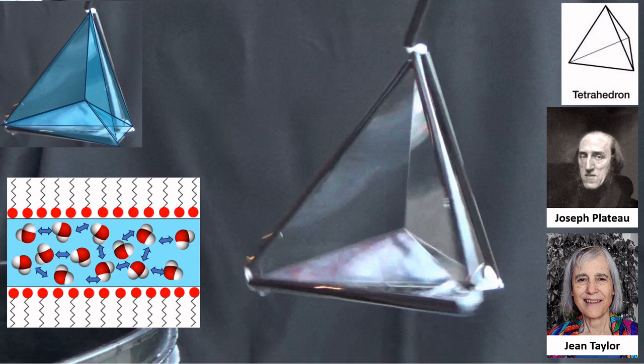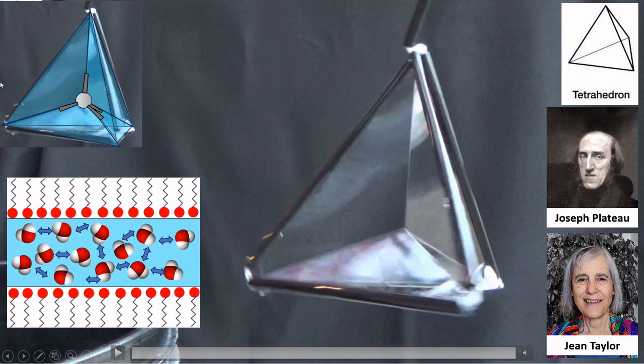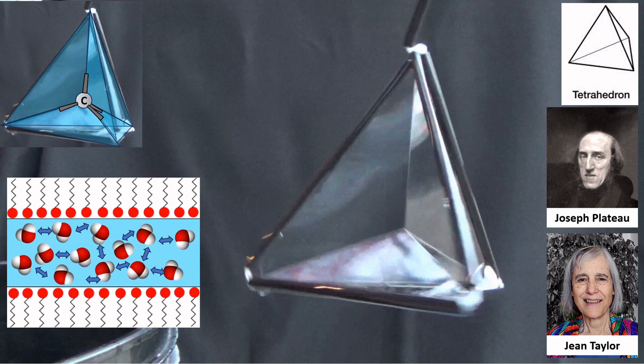The cool thing is this was a solution not just to minimal surface area, it's also one that the carbon atom utilizes. When carbon bonds, it bonds to four things, and those bonds are spread apart as far away from each other as possible, because those bonds are electrons that are negatively charged and they repel each other.